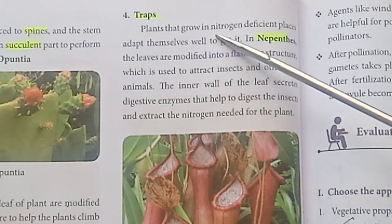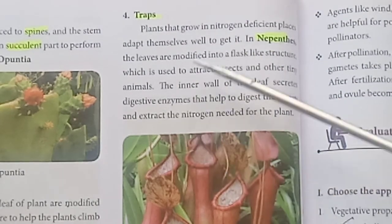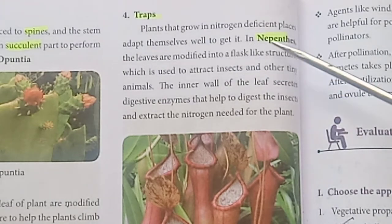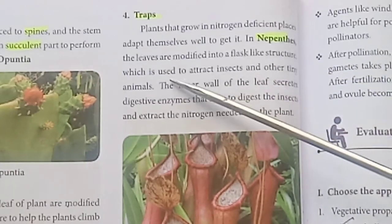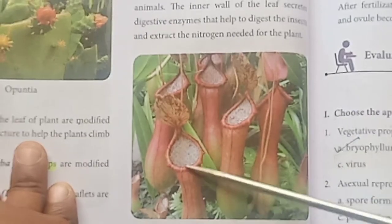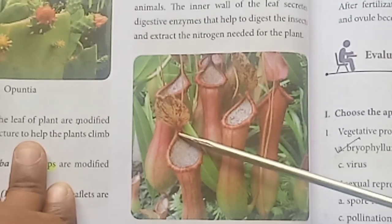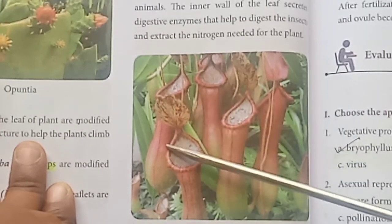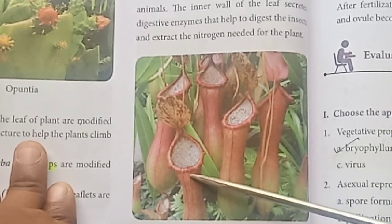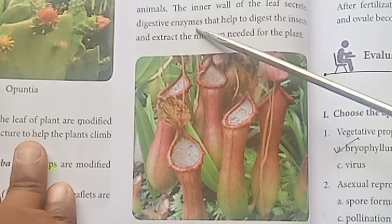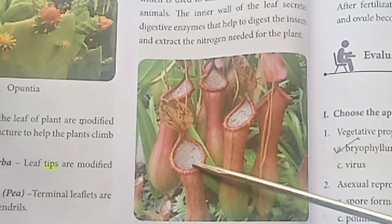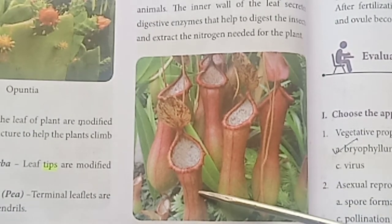Traps. Plants that grow in nitrogen-deficient places adapt themselves to obtain nitrogen. In Nepenthes, the leaves are modified into a flask-like structure used to attract insects and other tiny animals. The inner wall of the leaf secretes digestive enzymes that help to digest the insects and extract the nitrogen needed for the plant.